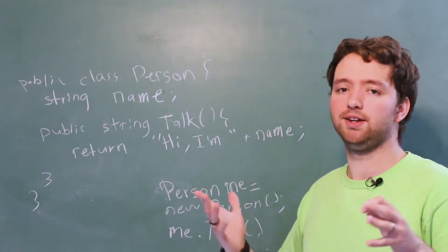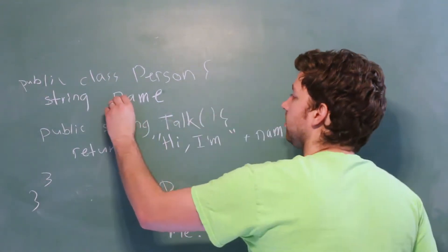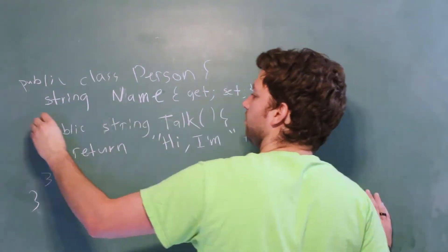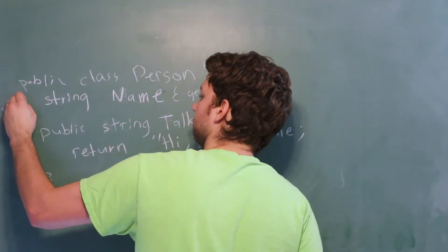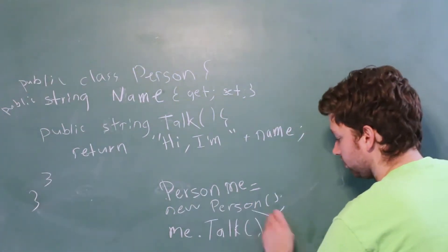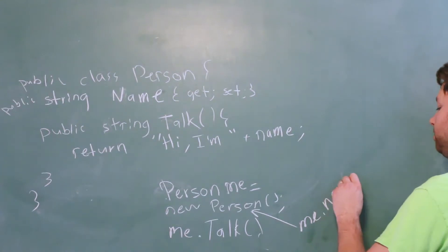One, we can make it public. In that situation, we might use a property. So it might look like this. Let's give it a capital name there. Say get and set and make it public. That's probably the best way to do it. And then down here, we could say me.name and give it a value.